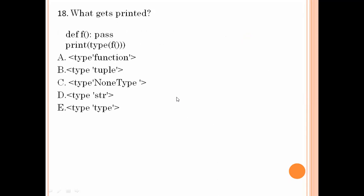What gets printed? Define f with pass. Print type(f). It prints the type of f — it prints nothing but NoneType. Option number C is the right answer.